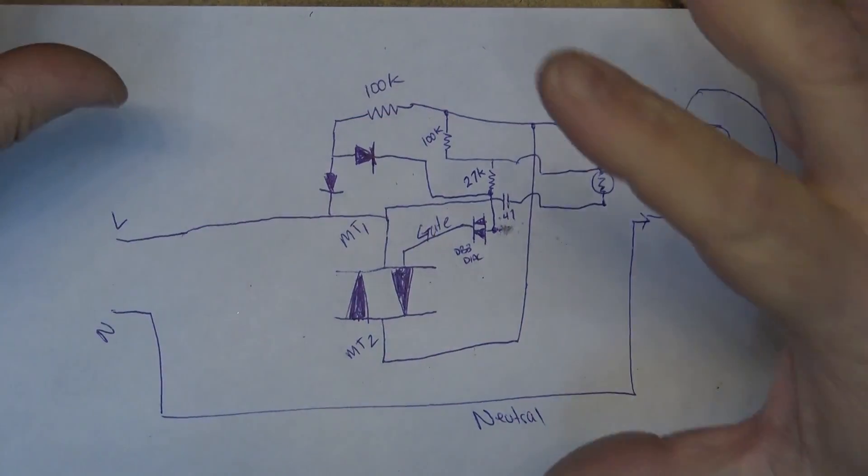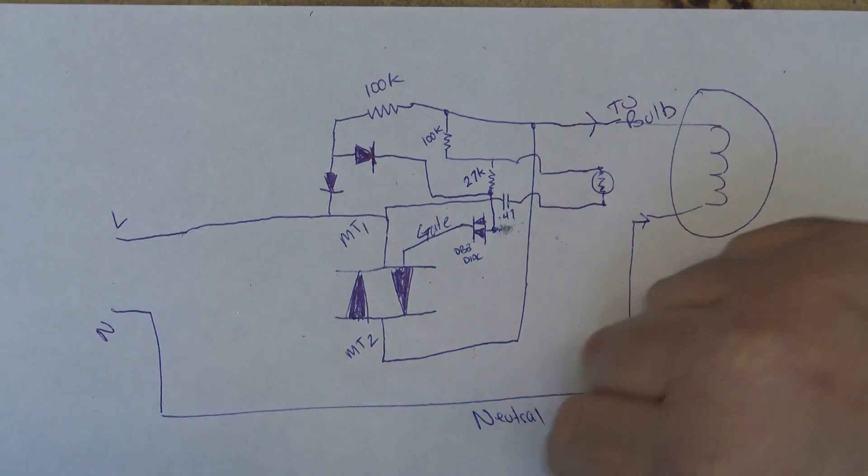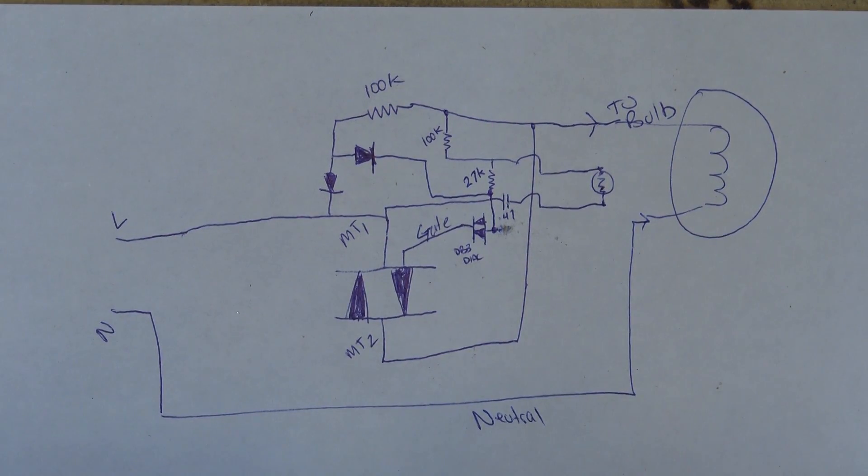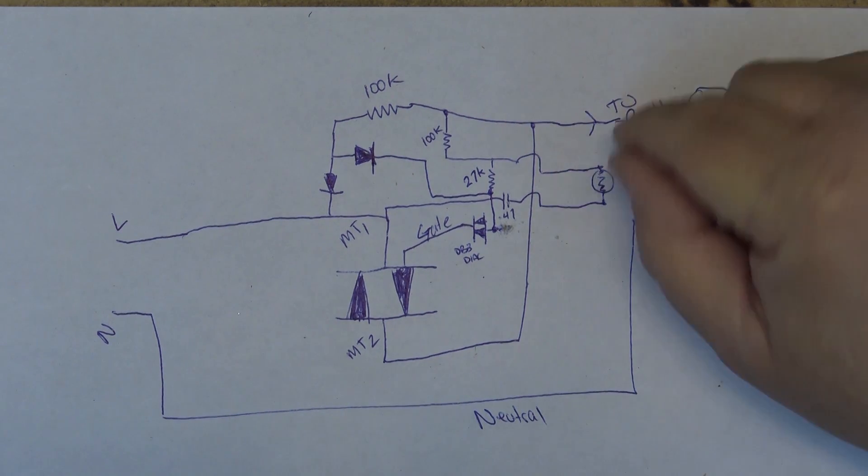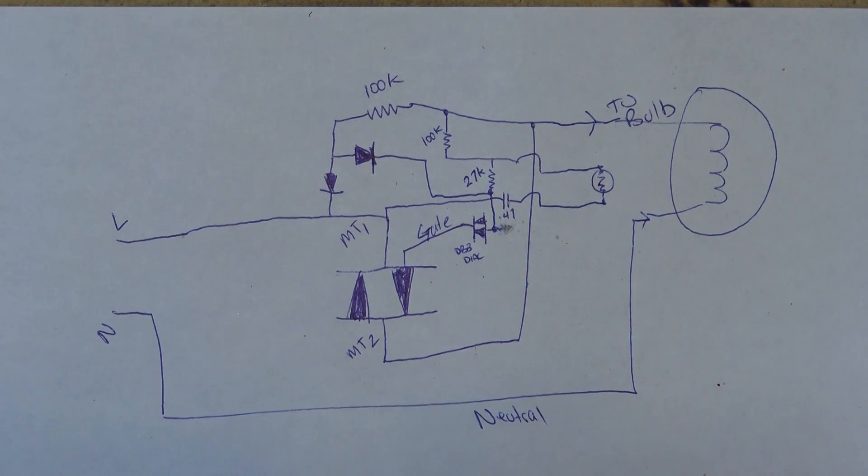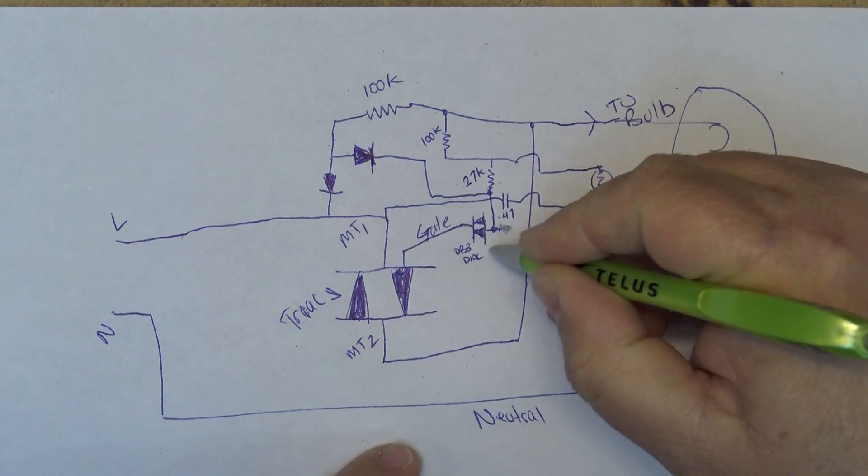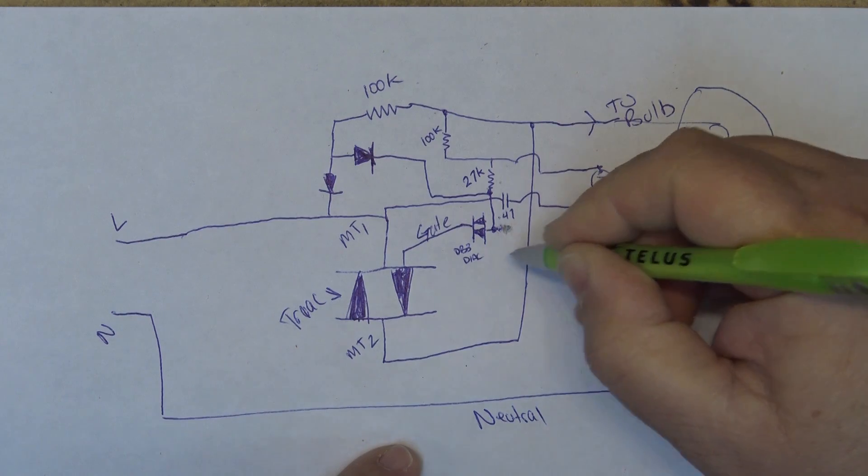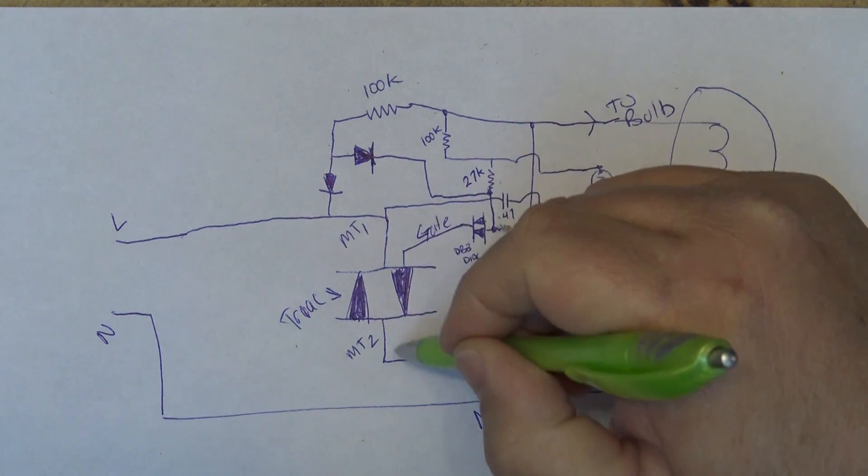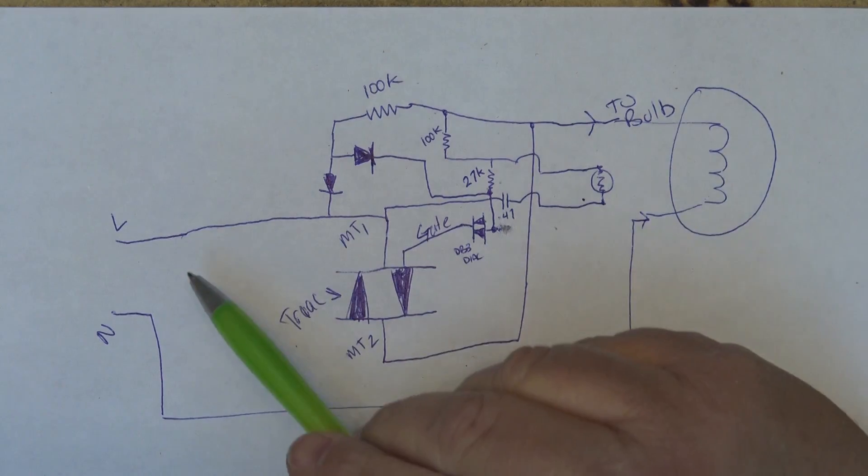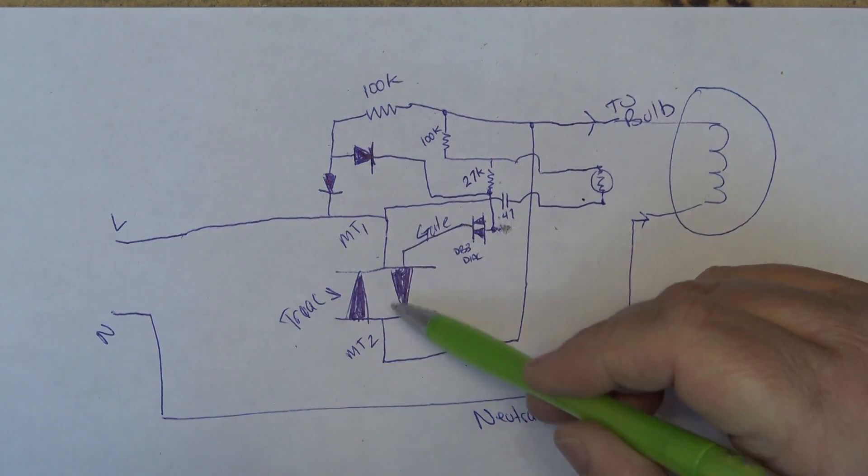Here's the schematic. Anybody familiar with light dimmers will know this is a light dimmer, no different than a conventional incandescent light dimmer, but instead of having a rheostat to control brightness, it's being replaced by a cadmium sulfide photocell. Our neutral goes straight through and isn't connected to the circuitry. We've got a triac here, a diac which conducts in both directions, and main terminal 1 and 2.